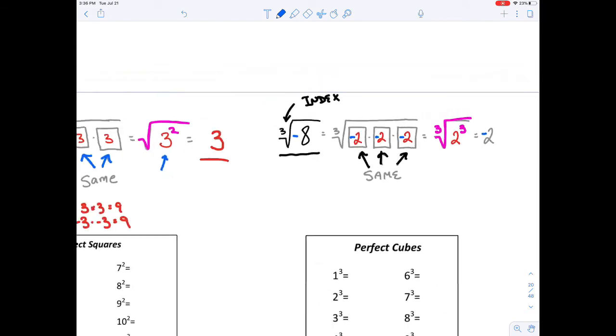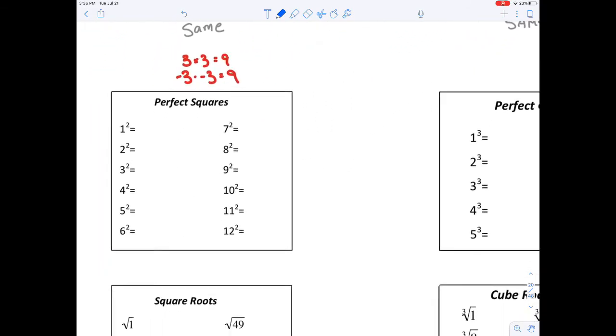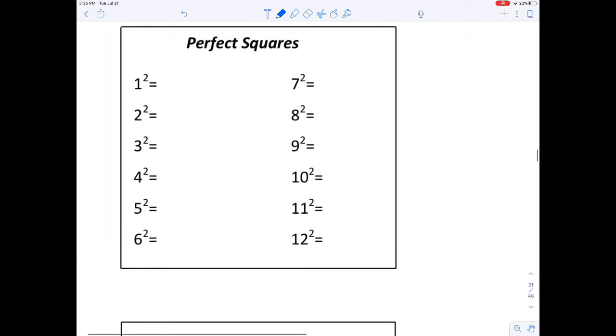With that in mind, perfect squares and cubes are the numbers that you get when you take your integers from 1 through 12 or 1 through any number of values, right? In Pennsylvania, in 8th grade, we memorize 1 through 12 for perfect squares.